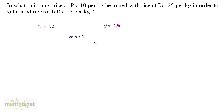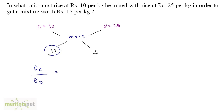According to the pictorial representation, on the right hand side we have the difference between the mean price and the cost of the cheap quantity — that's 15 minus 10, so 5. On the left hand side we have D minus M, that's 25 minus 15, so 10. So the ratio of the quantity of cheap rice to the quantity of costly rice is equal to 10 by 5, which is D minus M by M minus C. So 10 by 5 equals 2 by 1. Therefore the mixture must be mixed in the ratio of 2 is to 1.